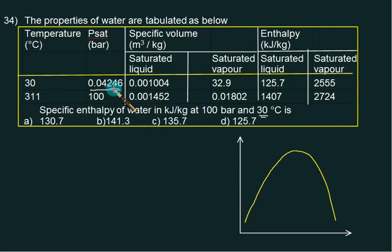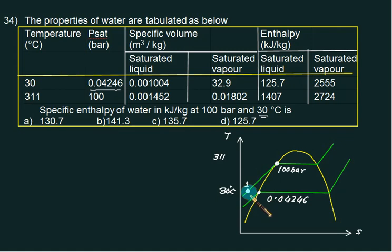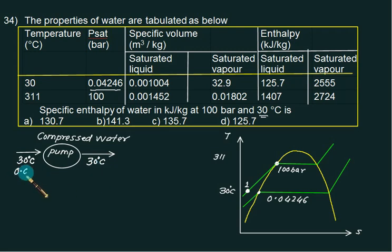On a T-s diagram, we can show the 0.04246 bar line and the 100 bar line. The point at 30°C and 100 bar represents the compressed liquid state whose enthalpy we need to find. Since this is compressed liquid, we first calculate the pump work. The pump receives water at 30°C and 0.04246 bar and discharges it at 30°C and 100 bar.